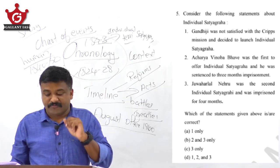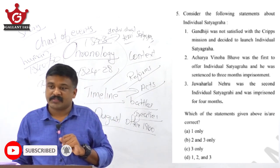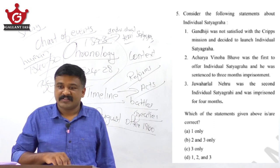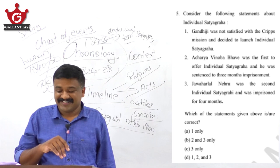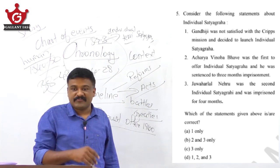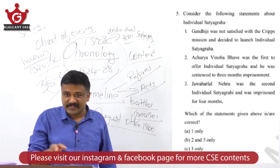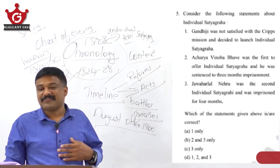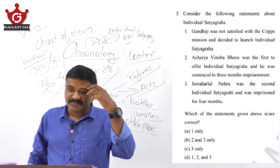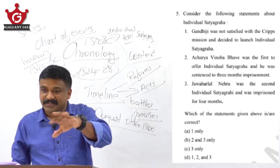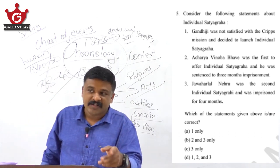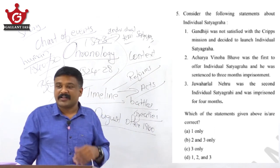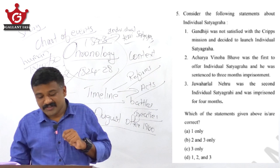Acharya Vinoba Bhave was the first to offer individual satyagraha and was sentenced to three months imprisonment. Jawaharlal Nehru was the second individual satyagrahi, and he was imprisoned for four months. UPSC may put two months and three months deliberately to confuse you, but two and three are the correct statements. Statement one is incorrect. Your answer has to be statements two and three only.